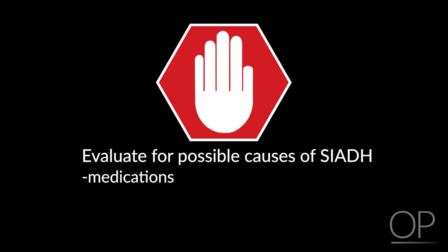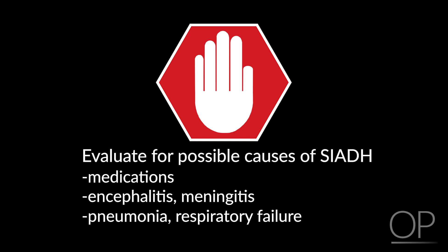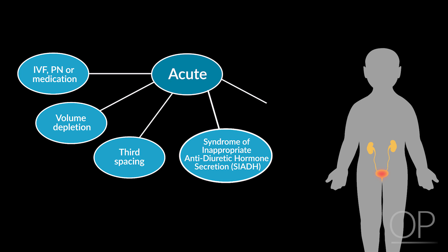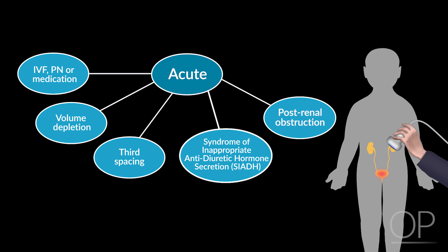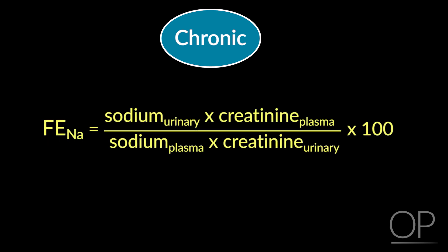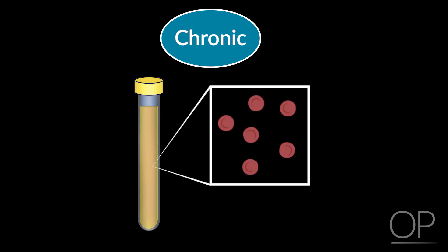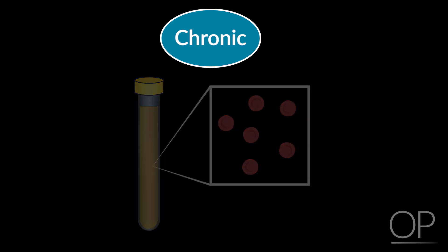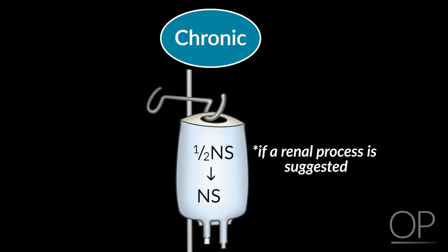SIADH causes also include problems with the brain or nervous system, including encephalitis or meningitis; problems with the lung, including pneumonia or respiratory failure; and cancer, such as lymphoma or brain tumor. If a post-renal process like hemorrhagic cystitis with obstruction is possible, a renal ultrasound may be indicated. If the process appears chronic and vital signs are normal, calculation of the fractional excretion of sodium can help determine the cause. The urinalysis can be evaluated for blood or red blood cells, and if a renal process is suggested, IV fluids can be changed from half-normal saline to normal saline.